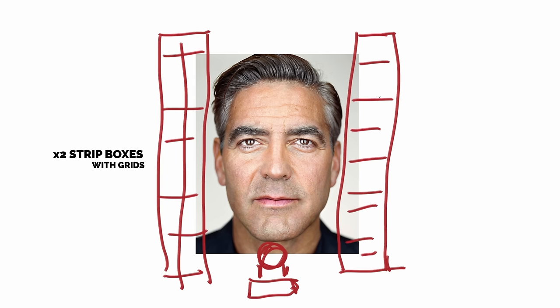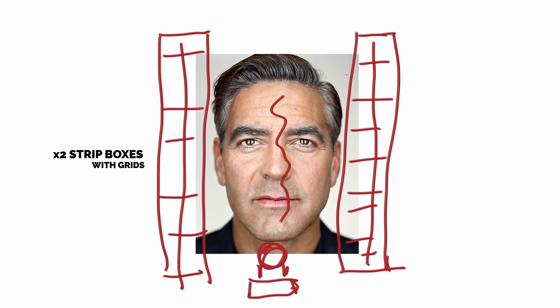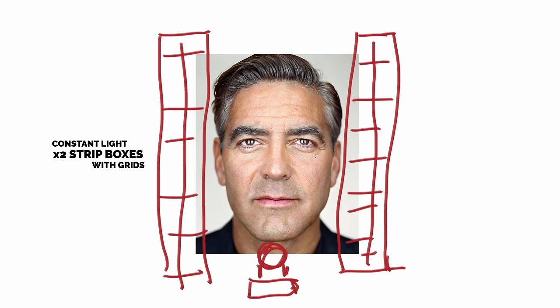I also think the lights are gridded because he doesn't want a lot of spill around the sides — he wants the light on the center of the face, not bleeding around to the sides. I'm guessing there's some kind of grid with those strip boxes. I'm also going to guess these are constant lights, because it would be horrible to sit in front of lights this close to your face flashing all the time. I'll use constant lights set to daylight balance at 5500 Kelvin — nice and easy on the eyes.